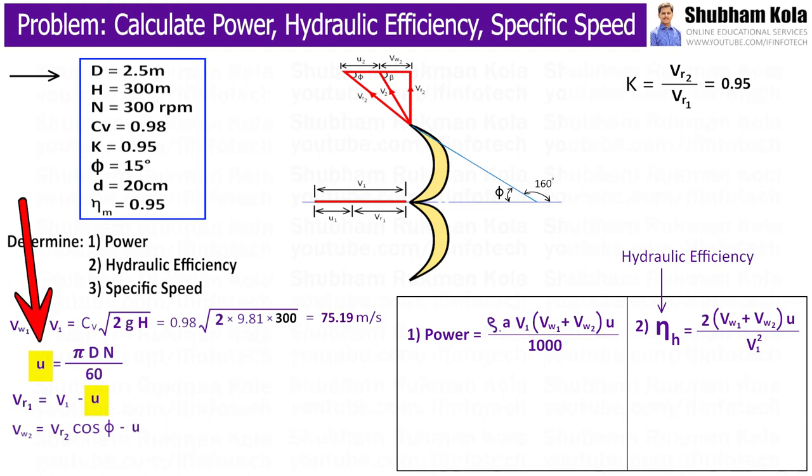Vr1 is V1 minus small u. The blade velocity small u would be calculated by formula, pi DN by 60. And in problem, we have mean diameter, capital D, is 2.5m, and speed provided as 300rpm. So, we will get blade velocity small u equal to 39.27 m per second.